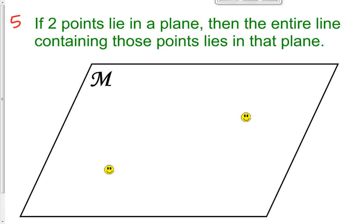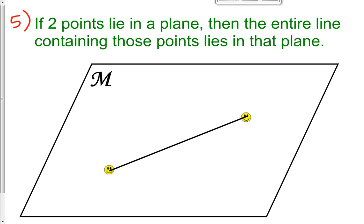Number five: if two points lie in a plane, then the entire line containing those points lies in that plane. So these two points — the two smiley faces here — they lie in plane M. If I connect these two points with a line and call it line L, then line L has to be contained in plane M because the two points lie in plane M. There's no other way to draw this figure.